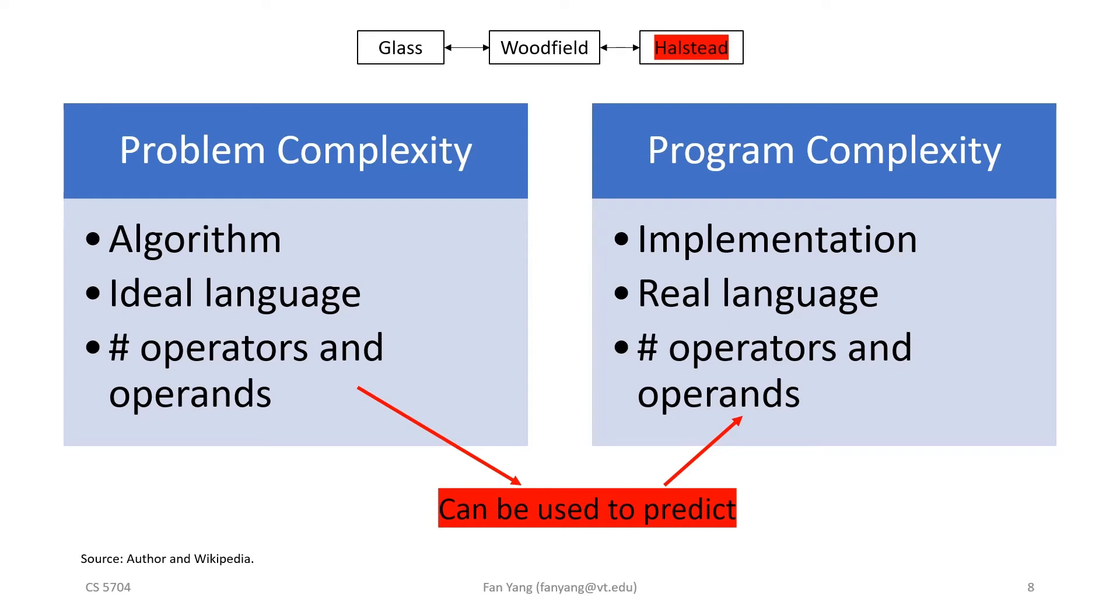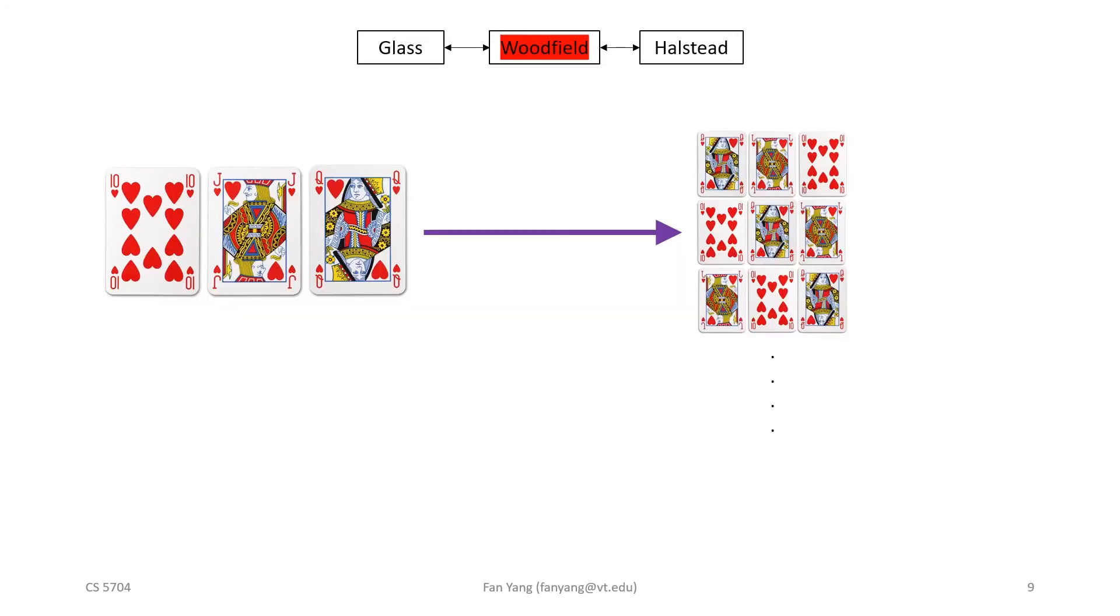If you are interested in the details, I would recommend checking out some of the references at the end of the video. So now that we kind of understand the theory, what was the experiment that Woodfield ran?